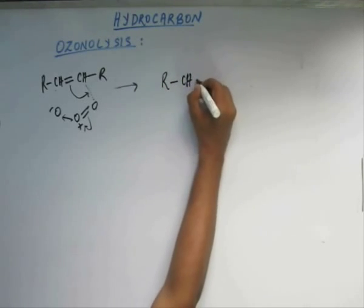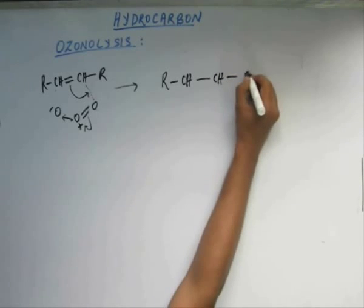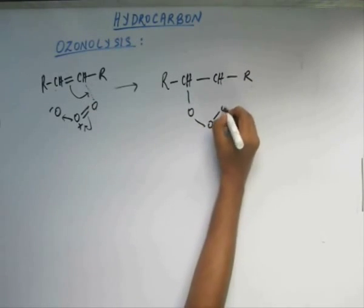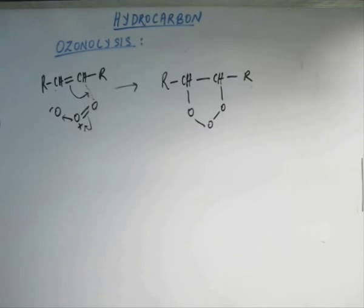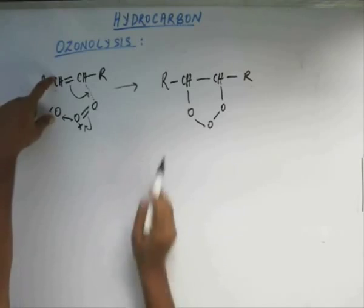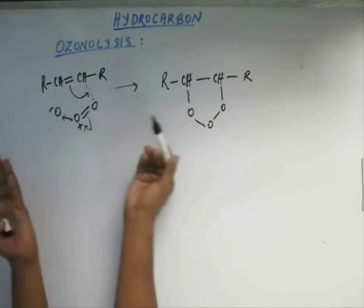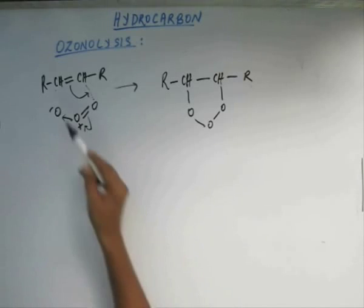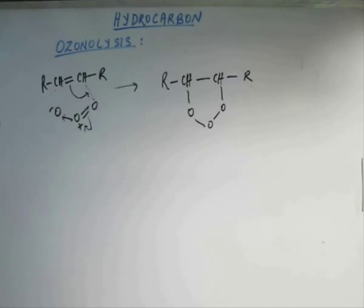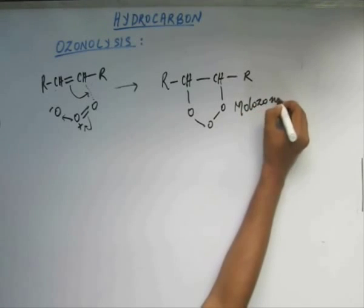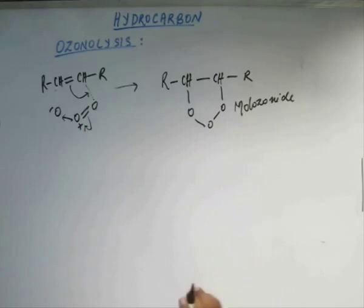So this kind of structure is going to appear — oxygen, carbon, oxygen forming a five-membered ring with the remaining oxygen. This pi bond will be broken and this structure we are going to get. This is called Moluzonide. This intermediate is called Moluzonide, and it is highly unstable.